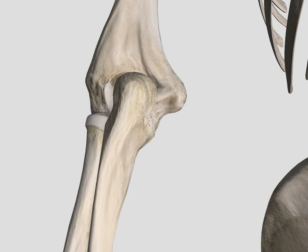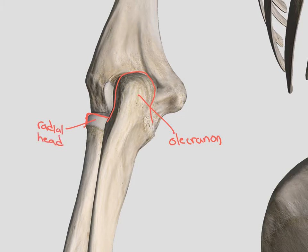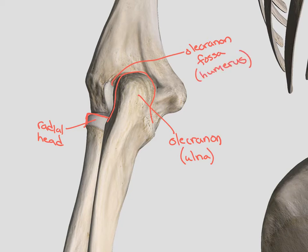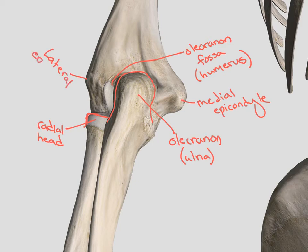When we look at the elbow from the posterior side, we can differentiate the radius based on the shape of the head and the squareness. And the ulna, due to its olecranon process on the posterior side — this is our olecranon process. Here was our radial head. The olecranon is attached to the ulna, and it sits in the olecranon fossa on the posterior side of the humerus. Here again we can see our medial epicondyle and our lateral epicondyle. We can also see the posterior side of the proximal radial ulnar joint, remembering that this creates our true elbow joint — the articulation between the humerus and the ulna.